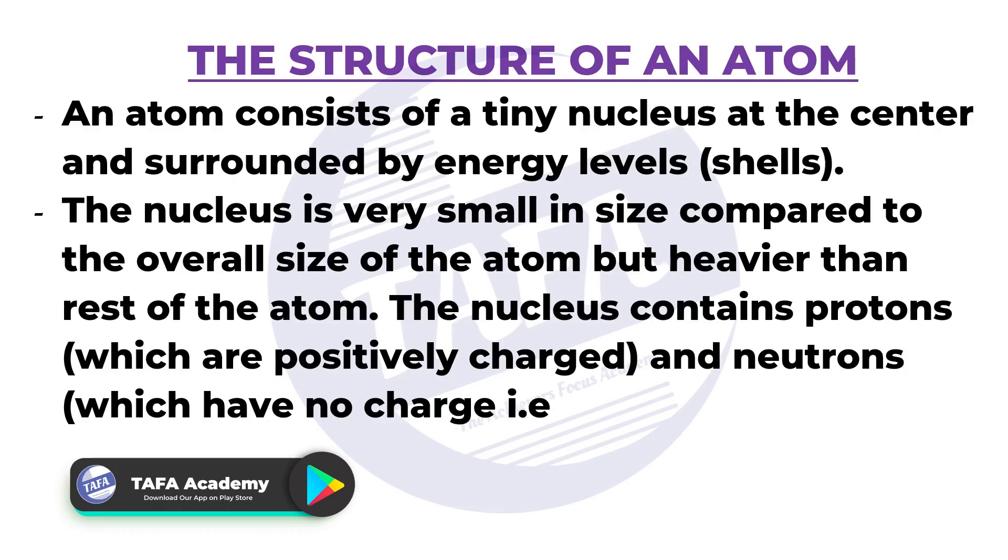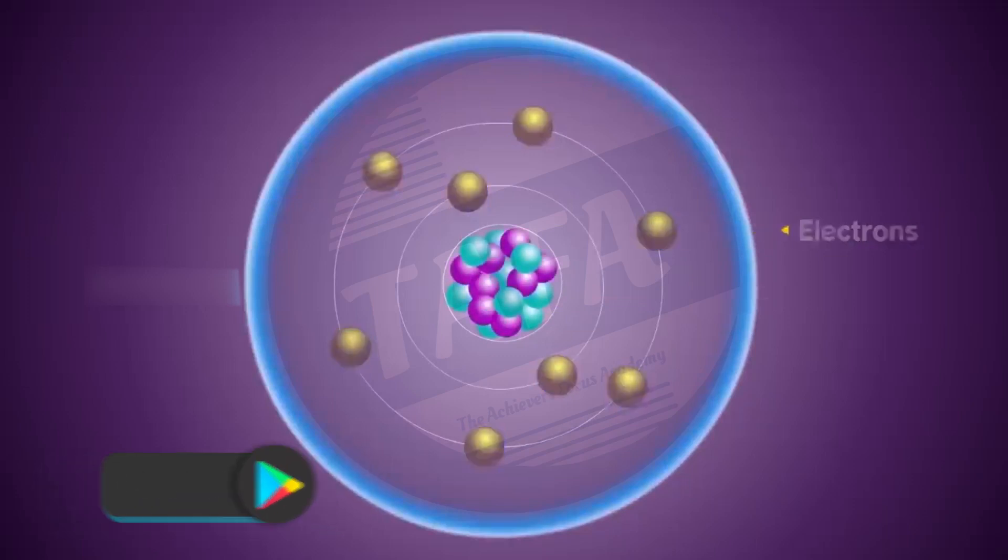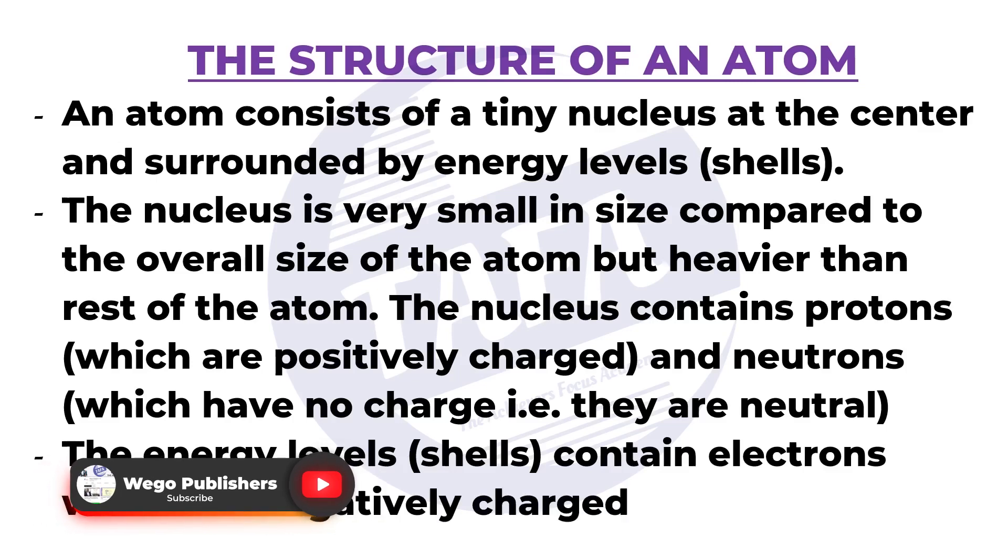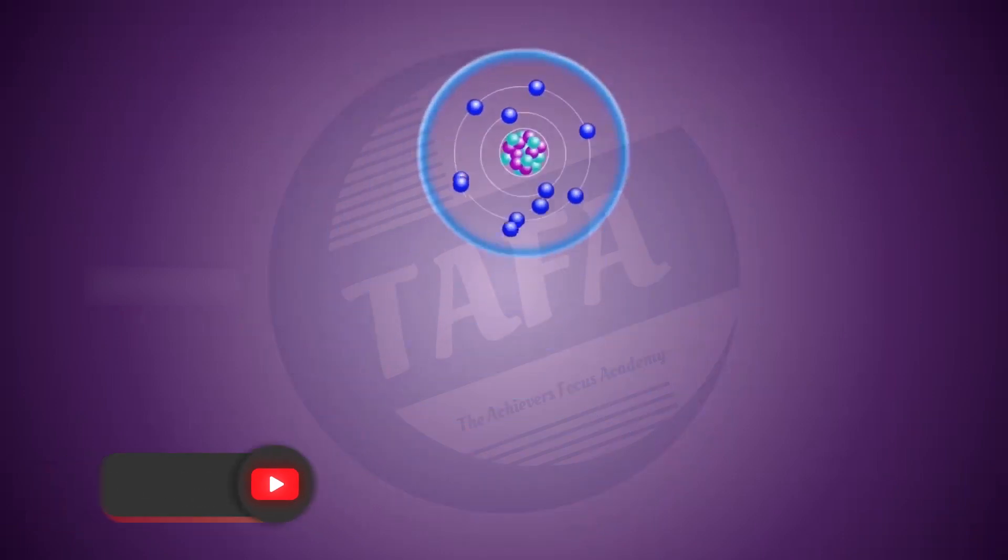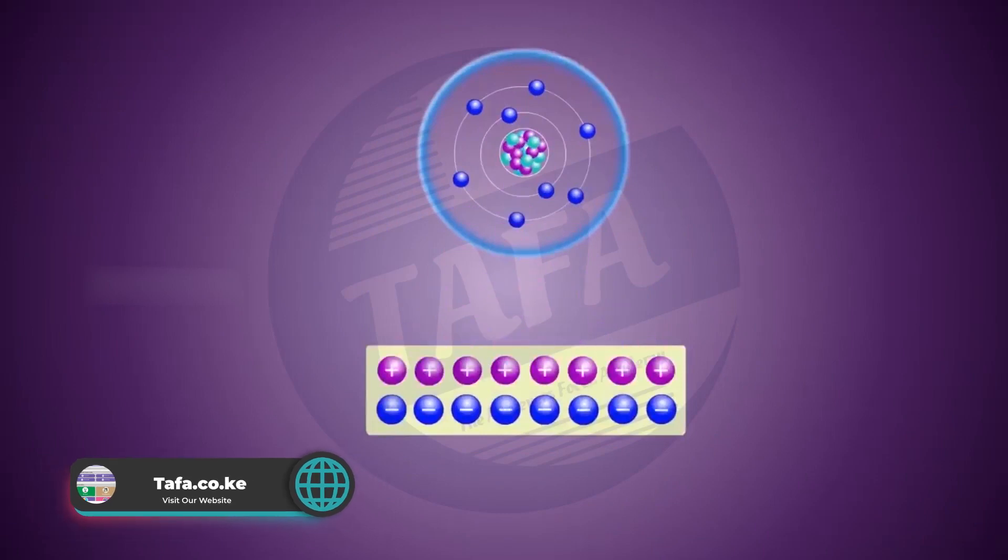have no charge—that is, they are neutral. The energy levels or shells contain electrons, which are negatively charged. The number of electrons in the shells is equal to the number of protons in the nucleus, making the atom electrically neutral.